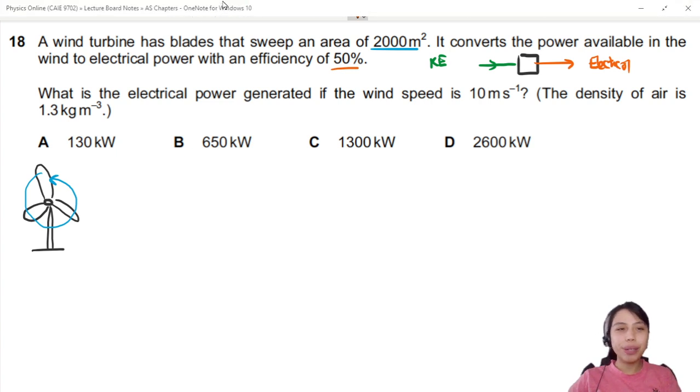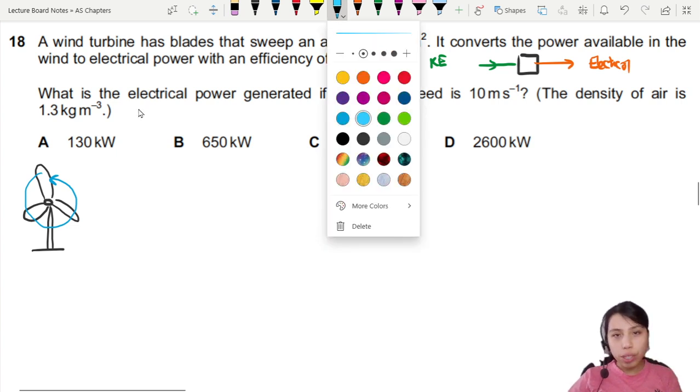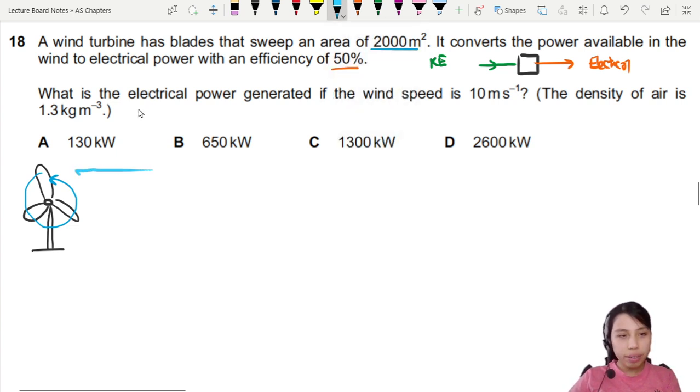We'll lose half of our energy or power. So what is the electrical power generated if the wind speed is 10 meters per second and the density of air is given? There is wind going into the turbine, something like this. Imagine a lot of air coming in at a certain velocity. This is the velocity of the air.